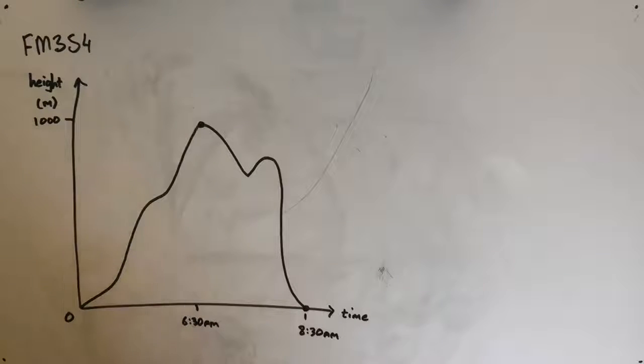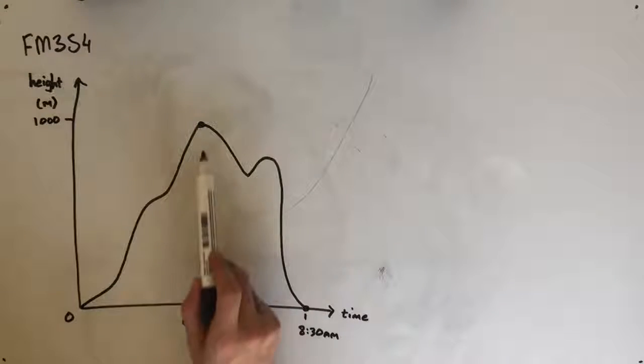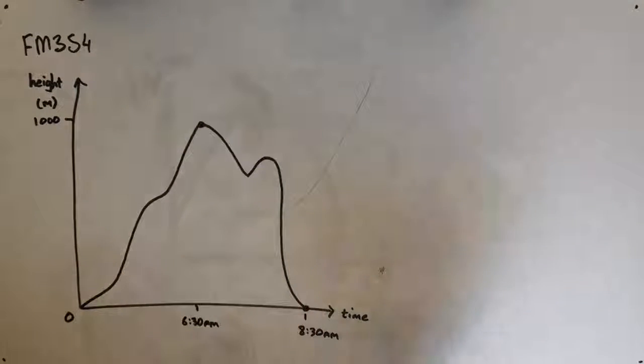So we're looking at this graph. You might be able to see that at 6:30am, the hot air balloon had an altitude of 1,000 meters. And then at 8:30am, it has an altitude of 0 meters.